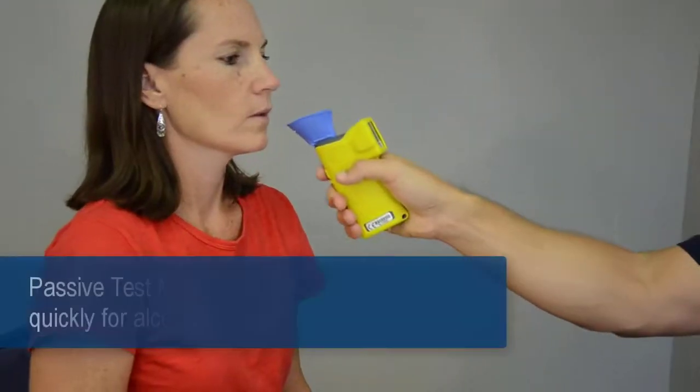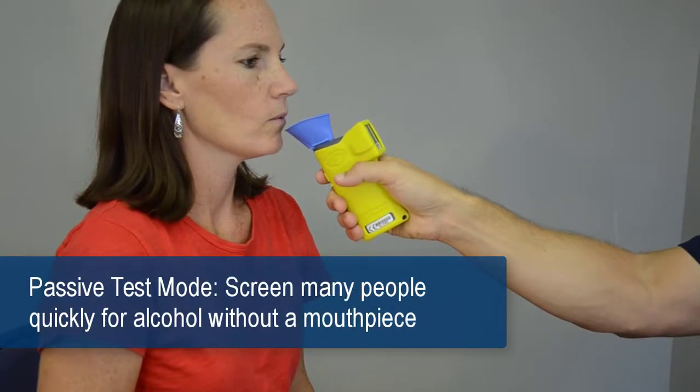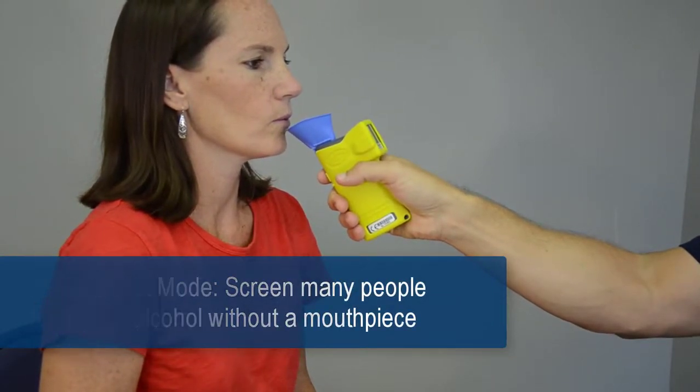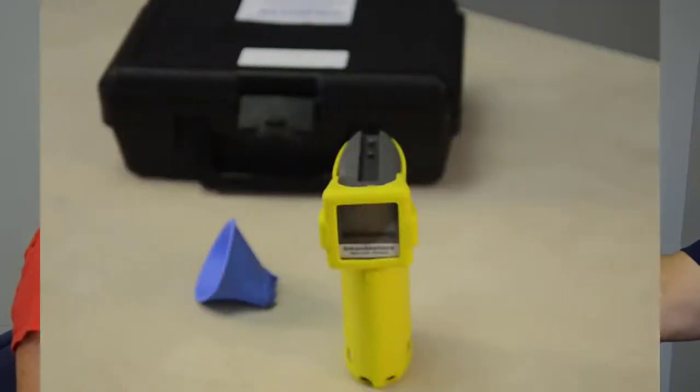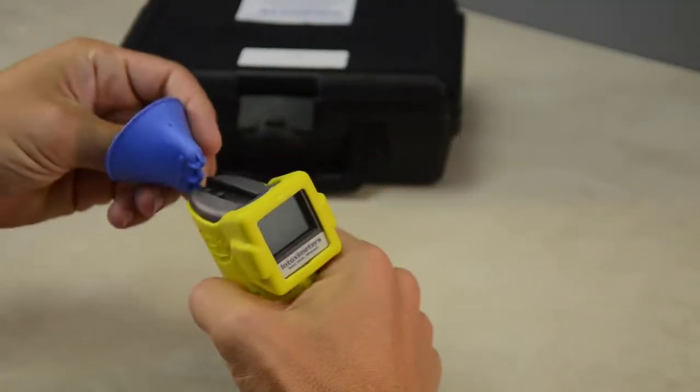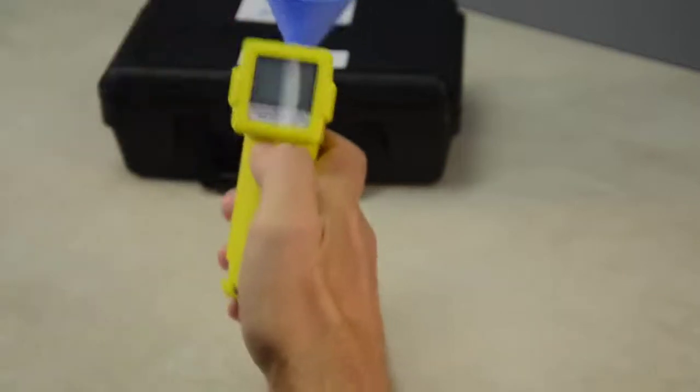The passive test mode allows the operator to screen many people very quickly for the presence of alcohol, without using a mouthpiece. Attach a breath sampling cup by aligning the holes over the inlet ports and snapping it into place.